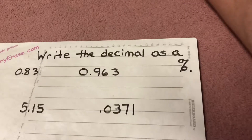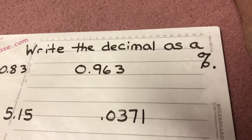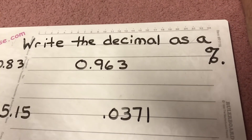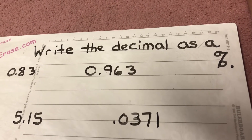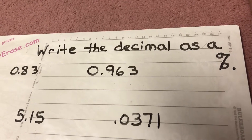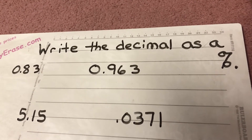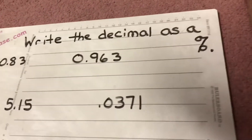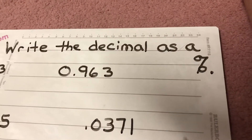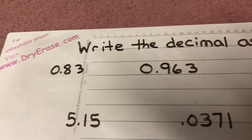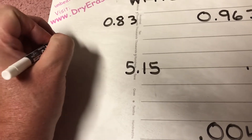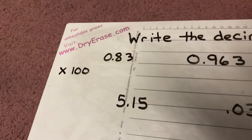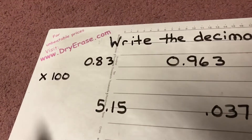Now we're also going to take a couple minutes and look at the exact opposite: write the decimal as a percent. Since we're doing the exact opposite — taking decimals and turning them into percents — you've probably figured out that I should technically be doing the opposite thing mathematically, which is true. I'm going to multiply the decimal by 100, which means I'm going to move the decimal twice to the right.